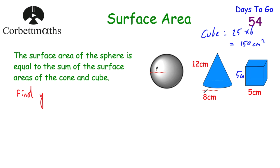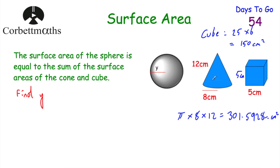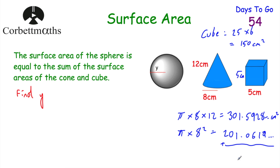For the cone, we need the area of the base — pi r squared — and the curved surface area — pi r L. So we do pi multiplied by radius 8 multiplied by slant height 12, giving 96 pi or 301.5928 centimetres squared for the curved surface. The base is pi multiplied by 8 squared, giving 64 pi or 201.0619 centimetres squared. Adding these together gives 160 pi, or 502.6548 centimetres squared as the total surface area of the cone.